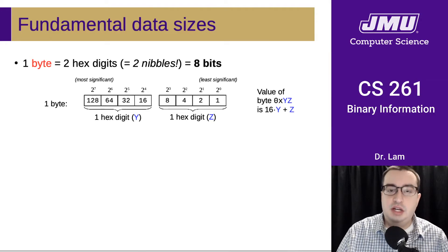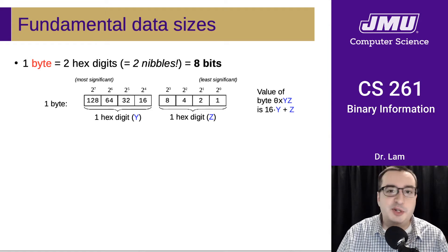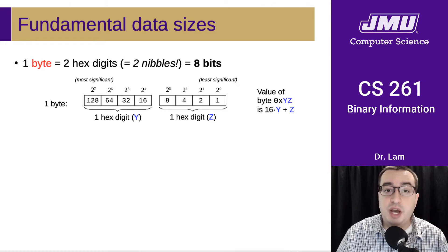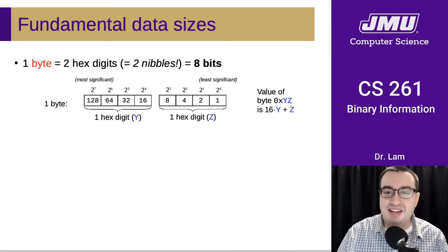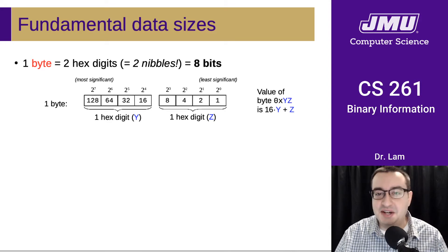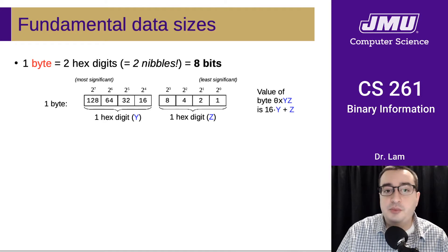The fundamental data size in most computers is called a byte. I'm sure you've heard of this before. It's really just eight bits, and this is equivalent to two hexadecimal digits side by side. Incidentally, four bits is also in some places called a nibble — that's a funny little unit of measurement. But really, most of the time we use bytes.